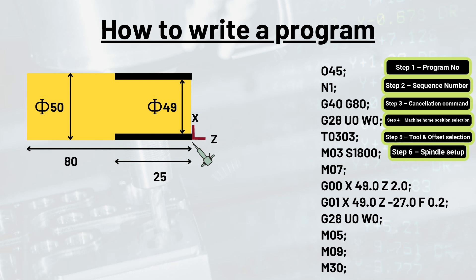We have to provide spindle speed as well, for which command starts with S. So a speed of 1800 RPM is provided by S1800. The complete command here is given by M03 S1800 end of block.